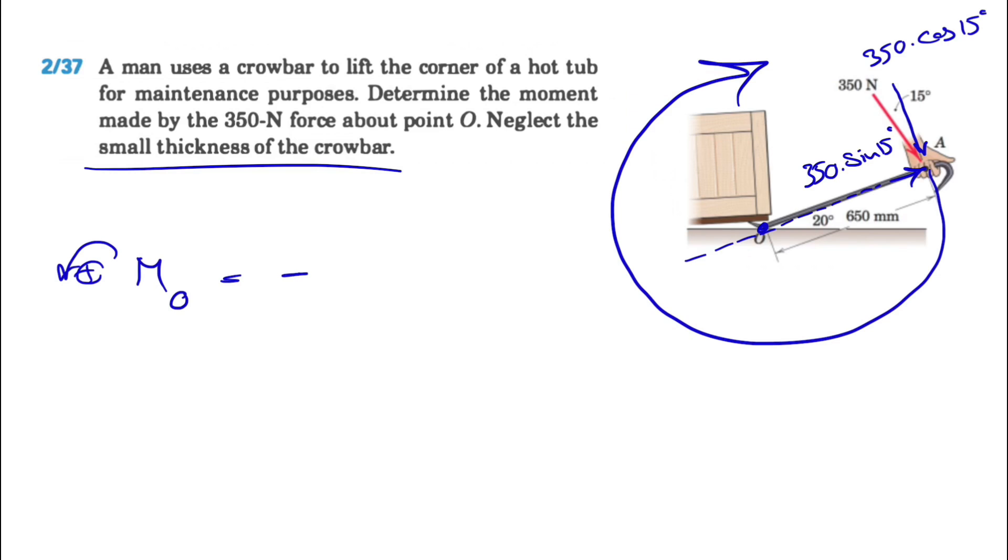So the force is 350 times cosine of 15 degrees, and the distance that we have is the length of the crowbar, which from the question we know is 650 millimeters. In order to get it in meters, we're gonna divide it by a thousand. That way it will be in meters, and if we calculate this we'll get minus 219.75.